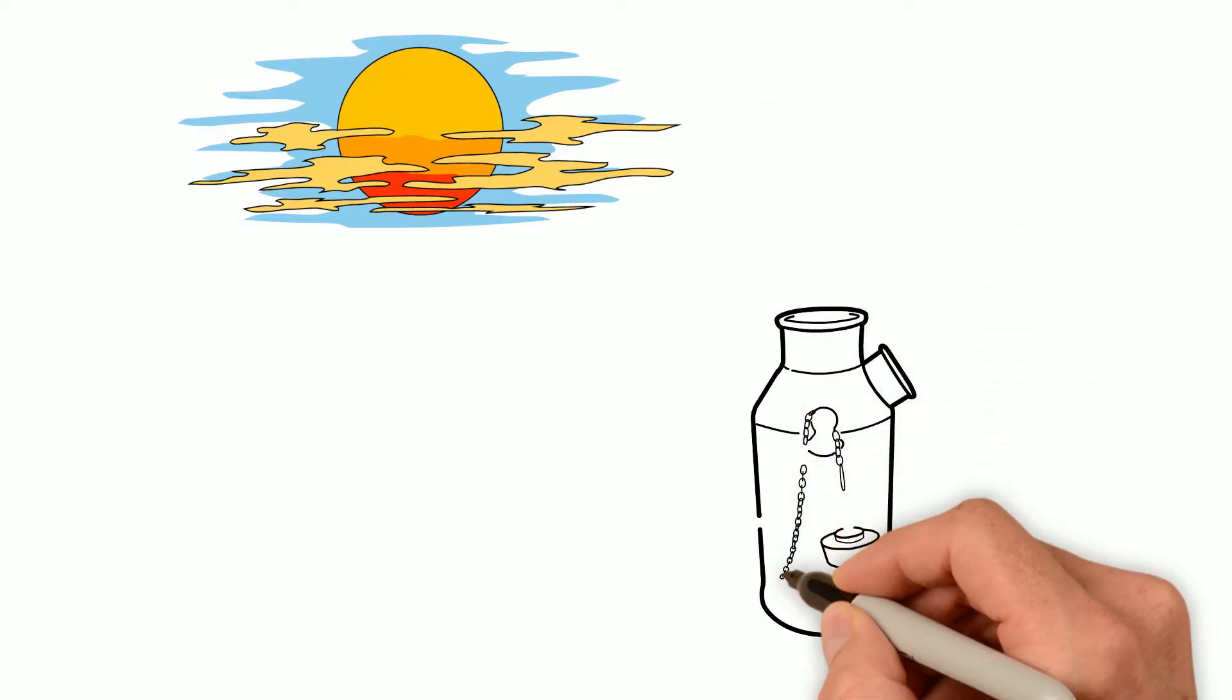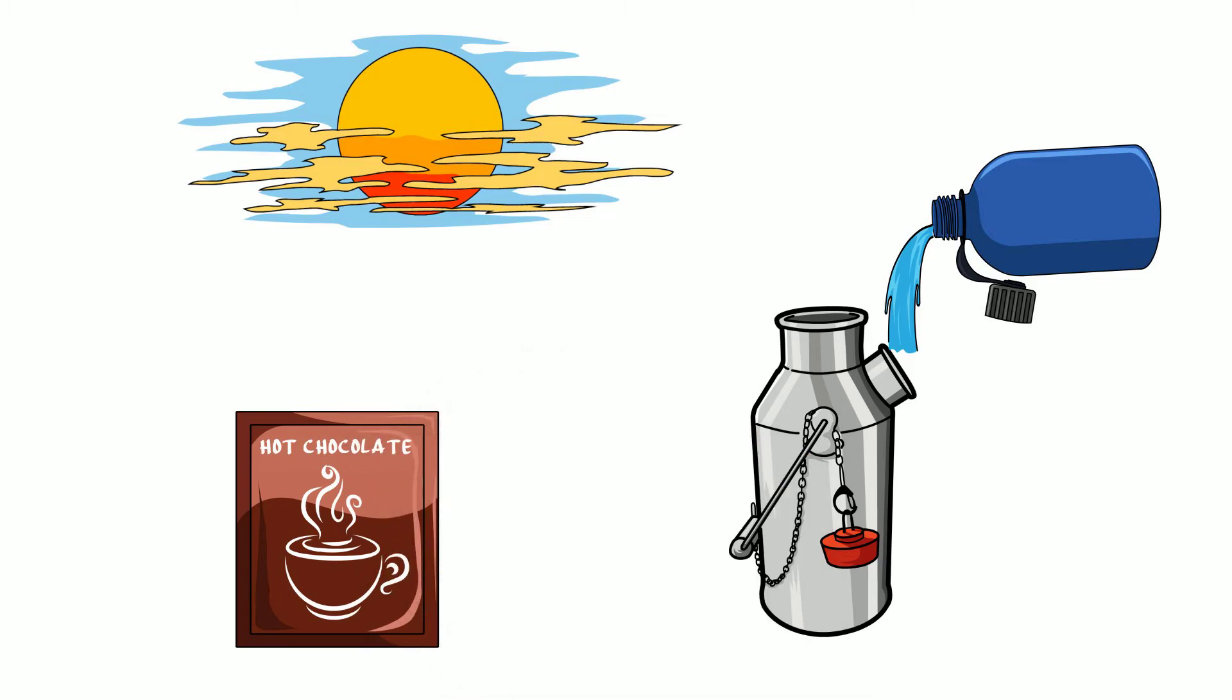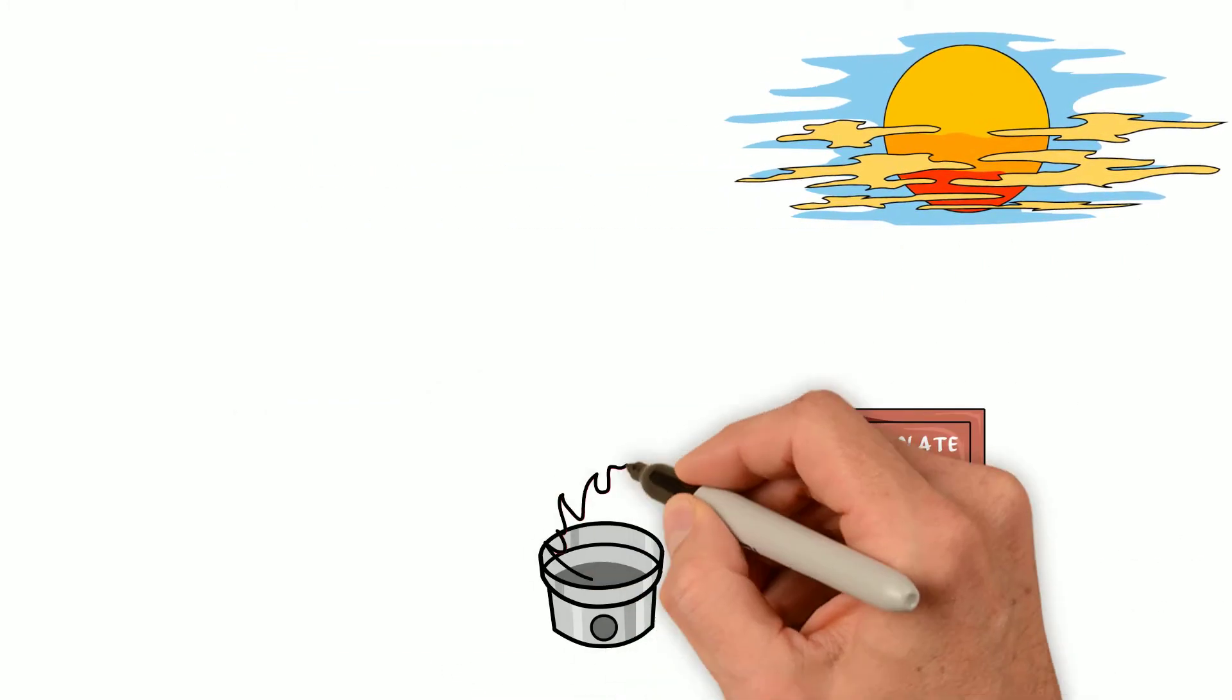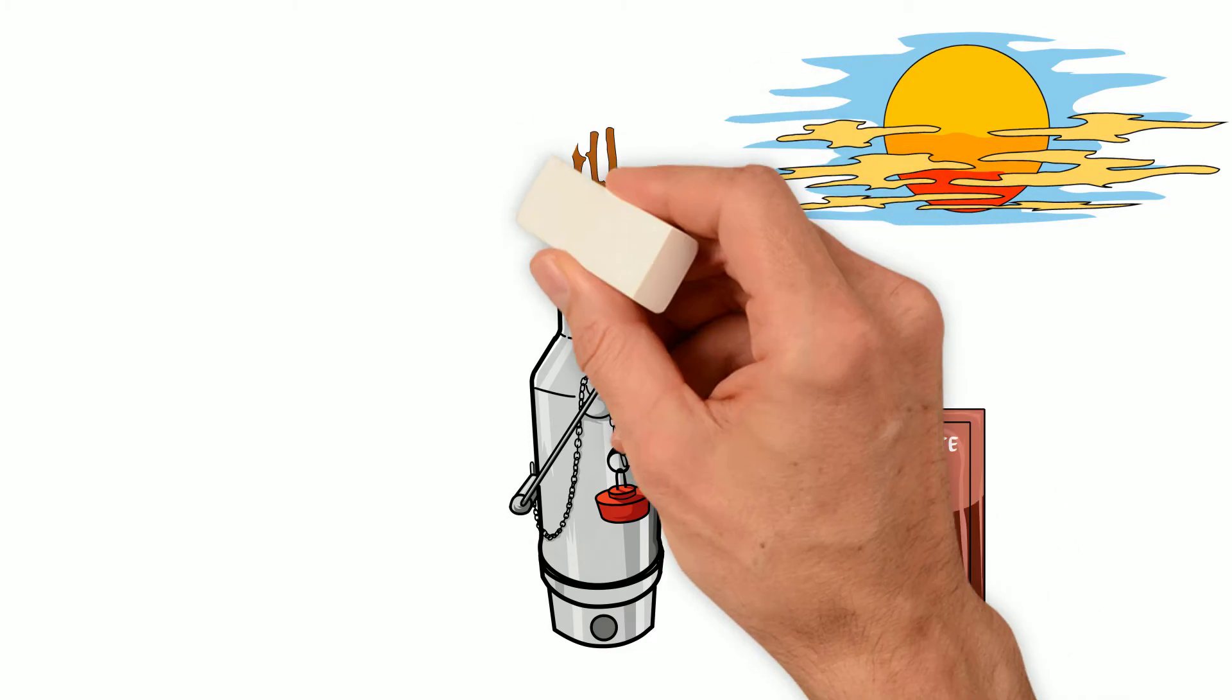As the glow of the setting sun colored the evening sky, Rick added more water to the kettle for some hot chocolate. He placed the kettle back on the fire base and stoked the fire by dropping a few more twigs down the chimney.